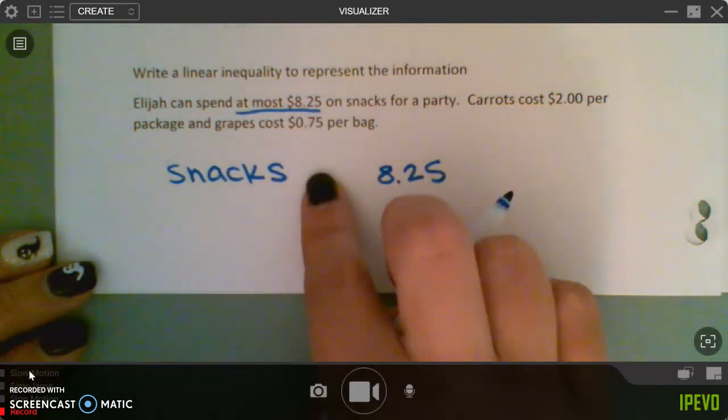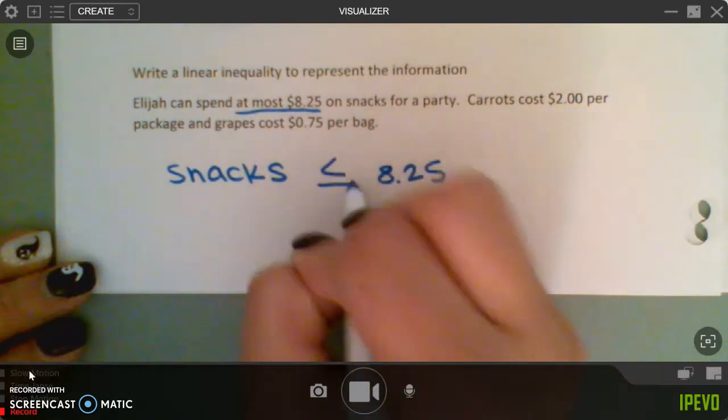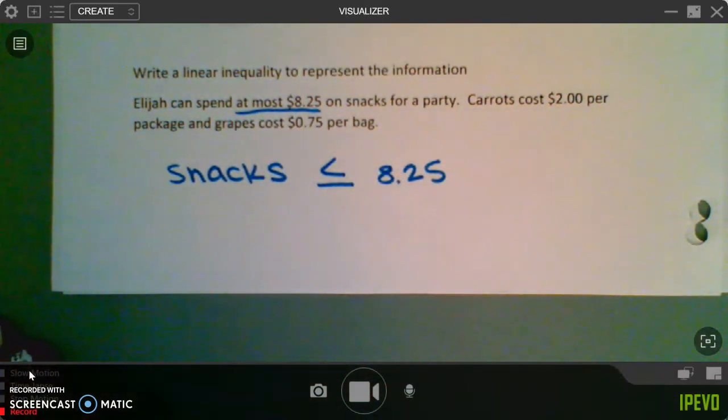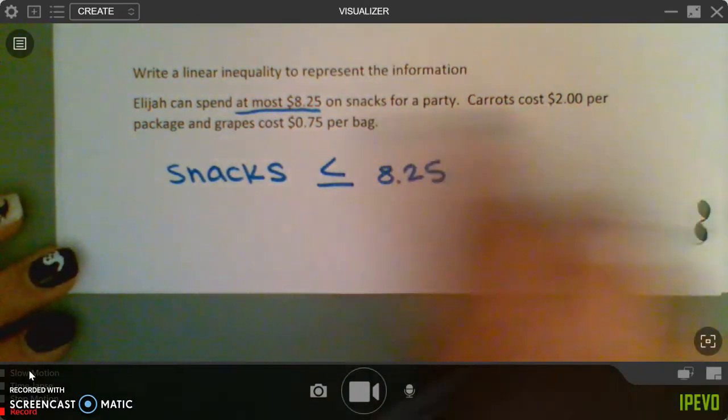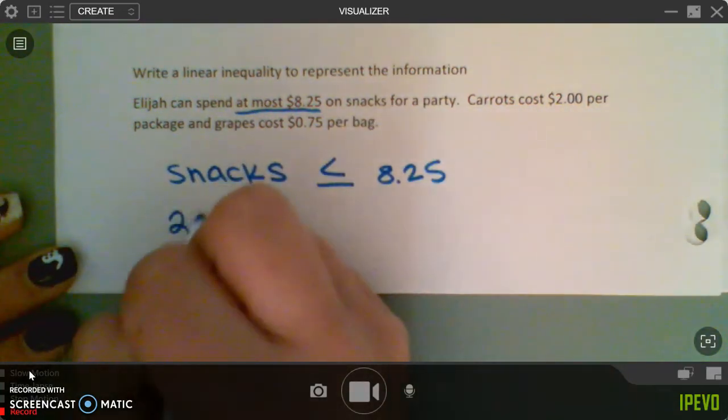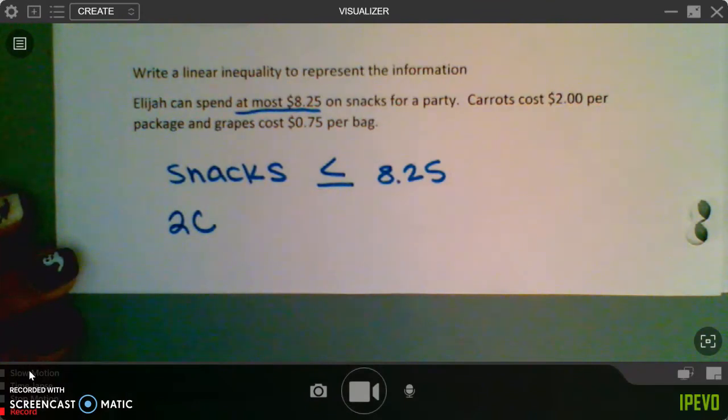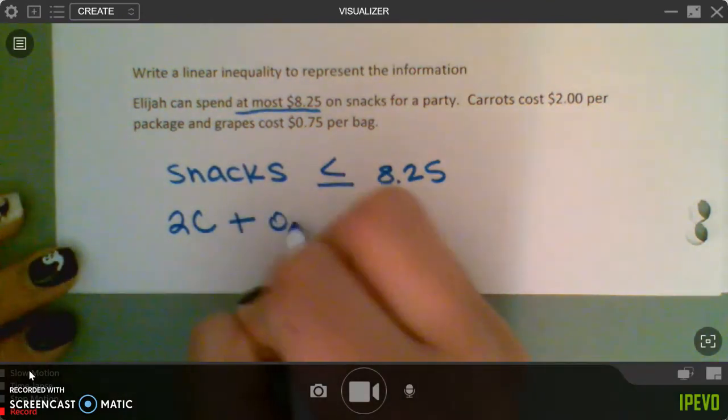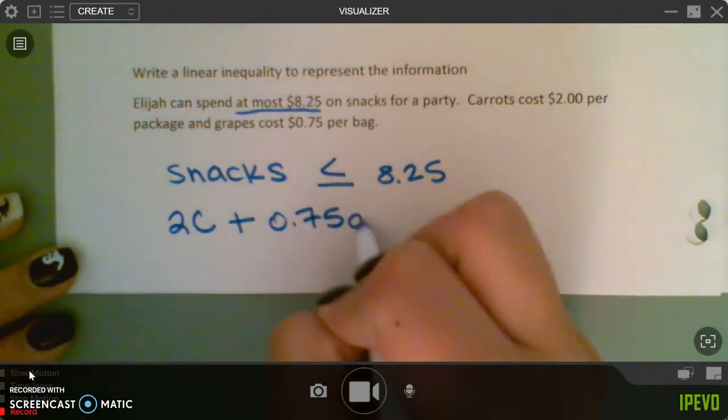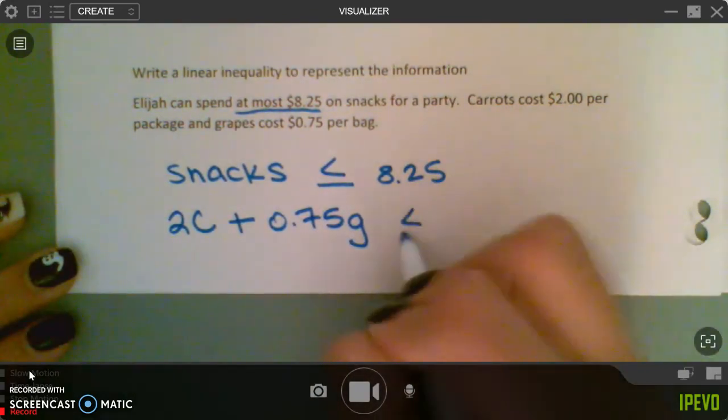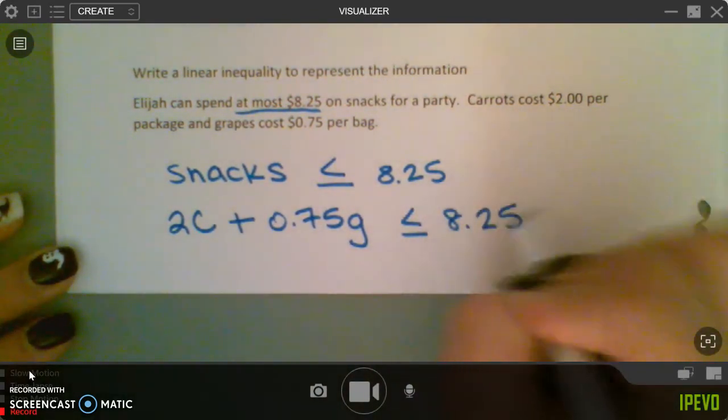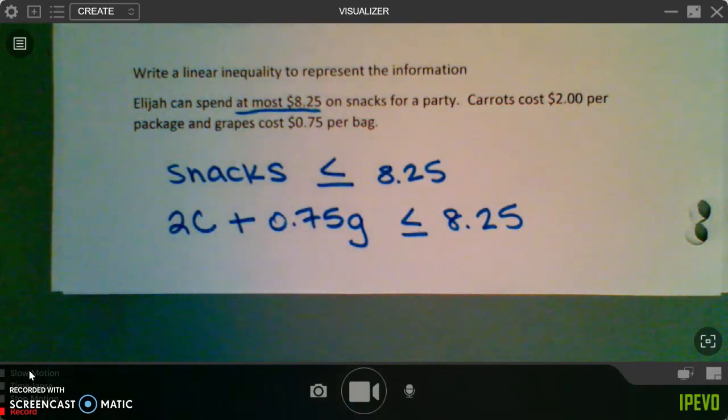So, it cannot be greater than, right? It has to be less than or equal to. However, the snacks we have prices on, so it's $2 for carrots, so we're going to do 2C for $2 for carrots, plus 0.75 grapes, less than or equal to 8.25. The last time we did this was, like, a quilting problem, like, at least a month ago.